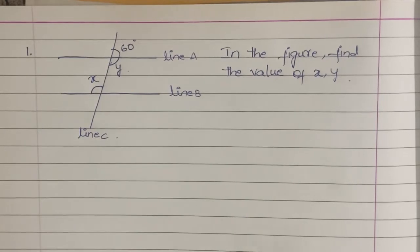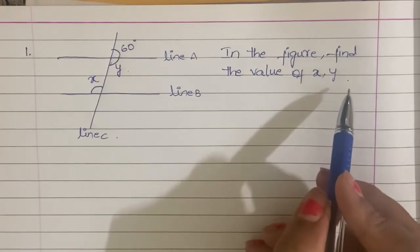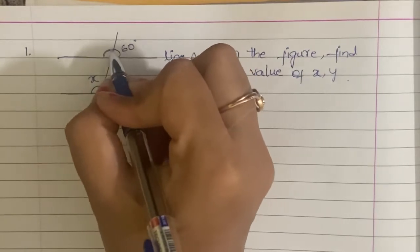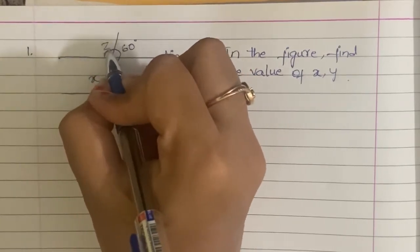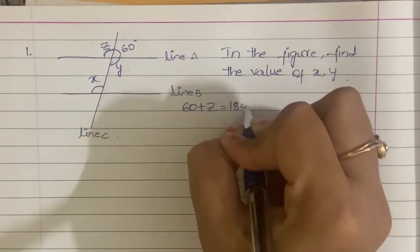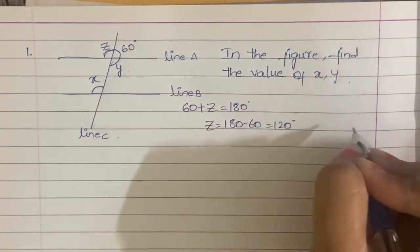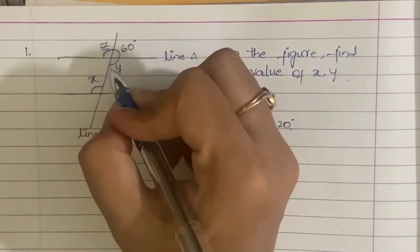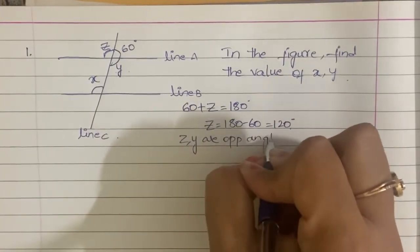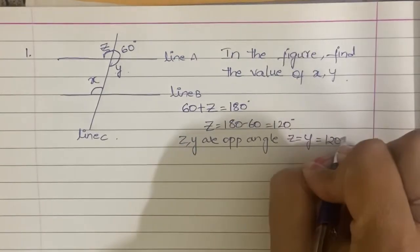Now we need to find the value of x and y. This angle is 60 degrees. This is a supplementary angle, so Z is equal to 180 degrees minus 60 degrees, which equals 120 degrees. Z and Y are opposite angles, so Z is equal to Y, which is equal to 120 degrees.